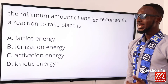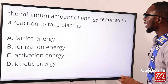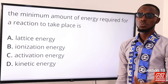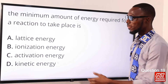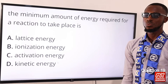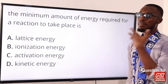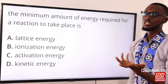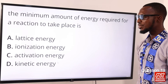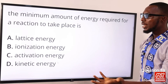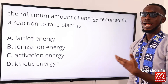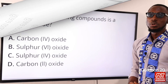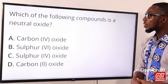Question nineteen: the minimum amount of energy required for a reaction to take place is what? That is the activation energy. Ionization energy refers to a gaseous atom and the energy required to remove an electron from it. So the correct option is option C for activation energy.